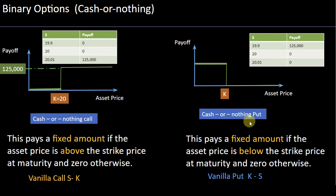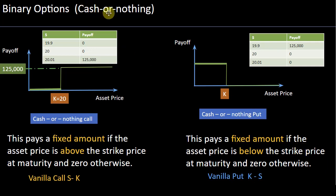In the same way, a cash-or-nothing put gives you a payoff of a fixed amount if the asset price is below the strike price at maturity, and zero otherwise. So if your strike is $20 and at maturity your underlying is $19.90, you will get a positive payoff of $125,000.